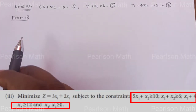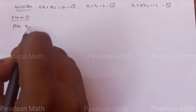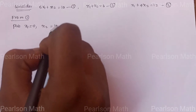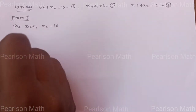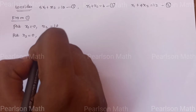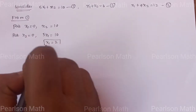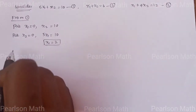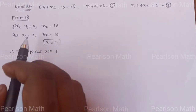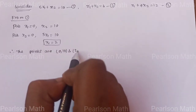Now, for the first equation, put x1 equal to 0. Then x2 equal to 10. Next, put x2 equal to 0, then 5x1 equal to 10, so x1 equal to 2. Therefore, the points are (0, 10) and (2, 0).